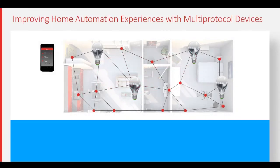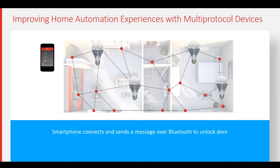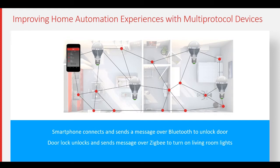Let's examine how home automation is improved with devices that support multi-protocol connectivity. Using a smartphone app, I can connect to a smart door lock over Bluetooth to unlock it. The multi-protocol capable door lock unlocks after receiving Bluetooth communication and sends a Zigbee message to turn on the living room lights.